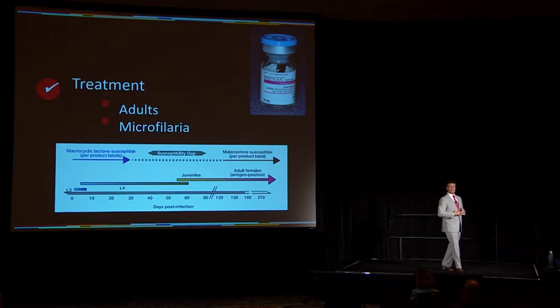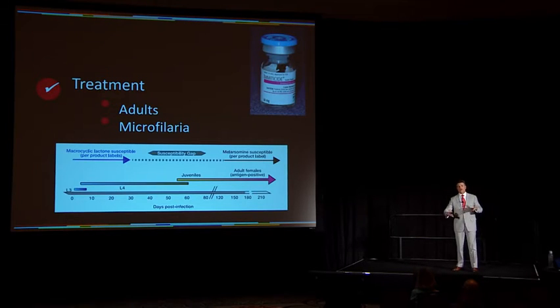What about microfilaria? We'd like to eliminate circulating microfilaria because without microfilaria, there is no transmission. A dog that is amicrophileremic does not serve as a reservoir even if it has an adult infection. Studies have shown that in combination with macrocyclic lactones, administration of doxycycline will hasten elimination of circulating microfilaria. So doxycycline plays a role both in treatment of adults and in elimination of circulating microfilaria.